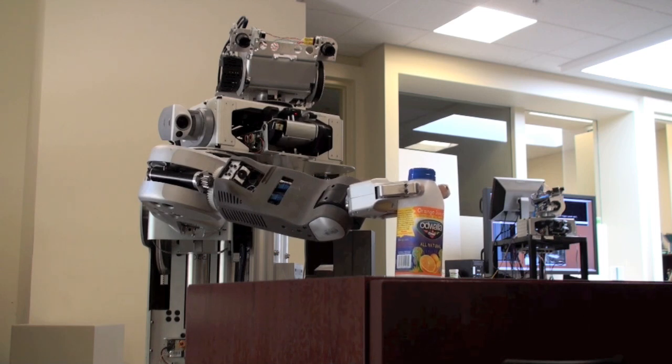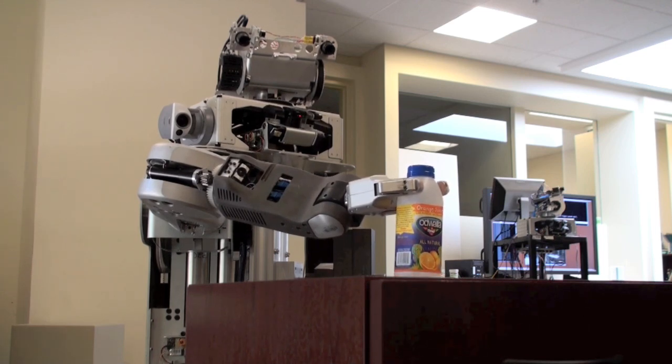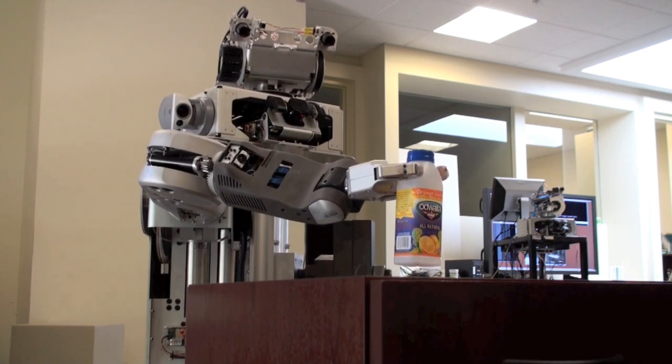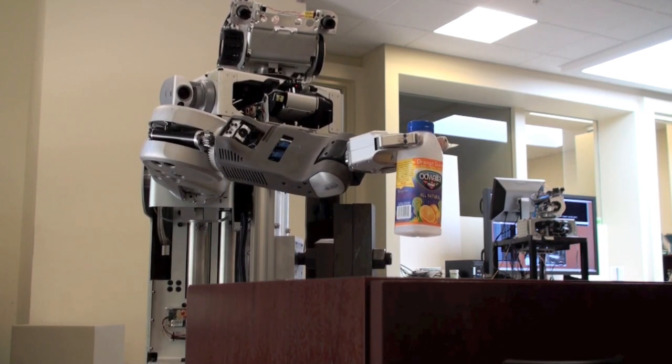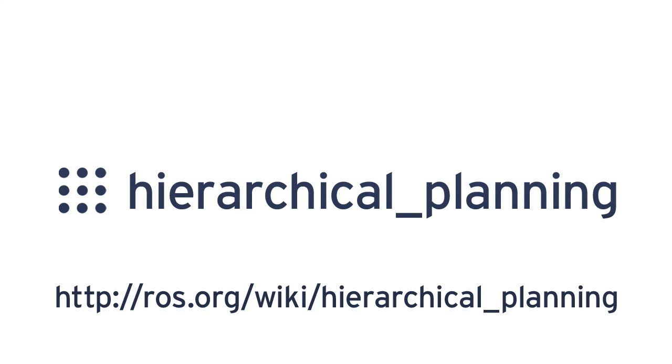Given these pieces of information, the robot uses a novel hierarchical planning algorithm to decide which implementation of each high-level action to take, resulting in an efficient primitive plan to accomplish its goals. For more information about this project, check out hierarchical planning on Ross.org. Thank you.